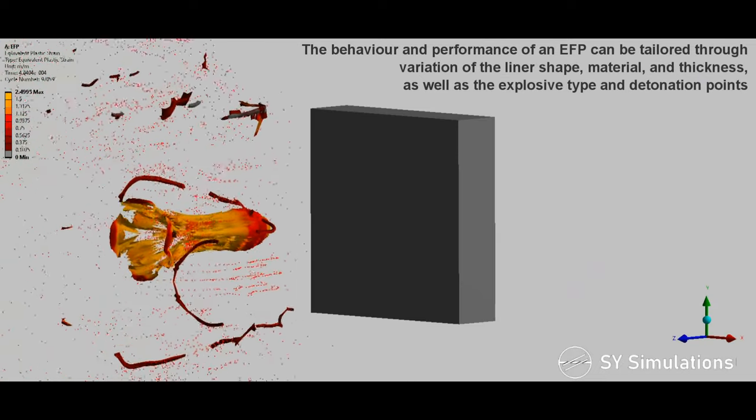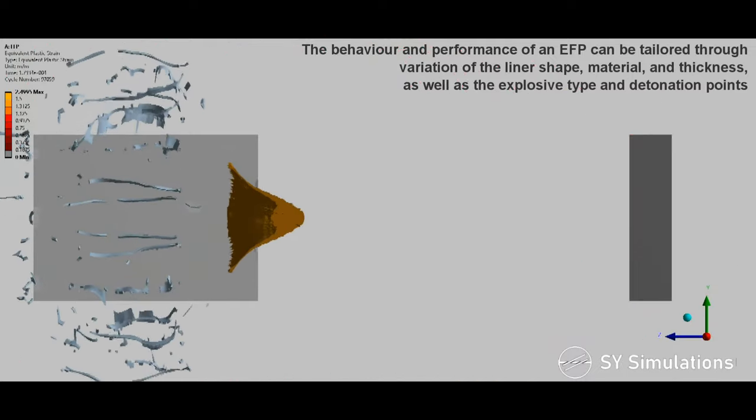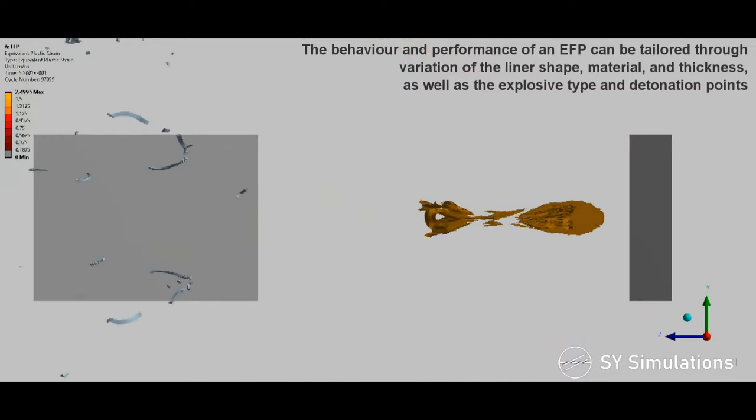The behavior and performance of an EFP can be tailored through variation of the liner shape, material, and thickness as well as the explosive type and detonation point.